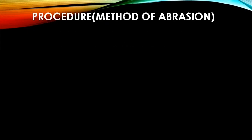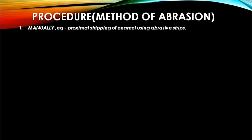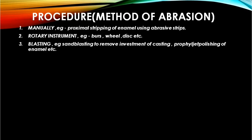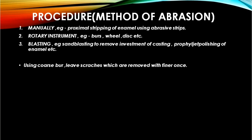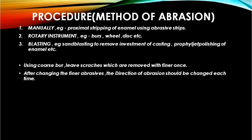Procedure and method of abrasion: manually, such as proximal stripping of enamel using abrasive strips. By rotary instruments such as burs, buffs, and discs. By using blasting, for example sandblasting to remove investment from a casting. Use of coarse abrasives leaves scratches which are removed by fine ones. In every grade change of the abrasive, the direction should also be changed.